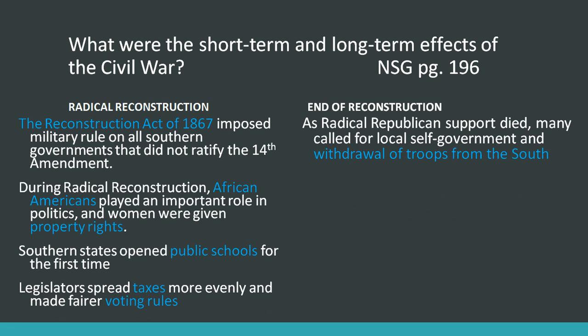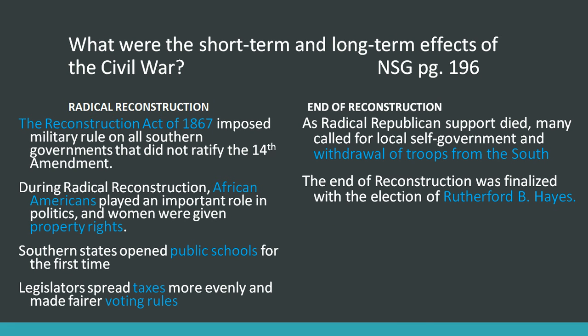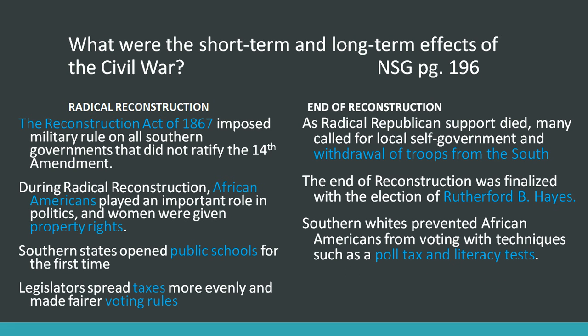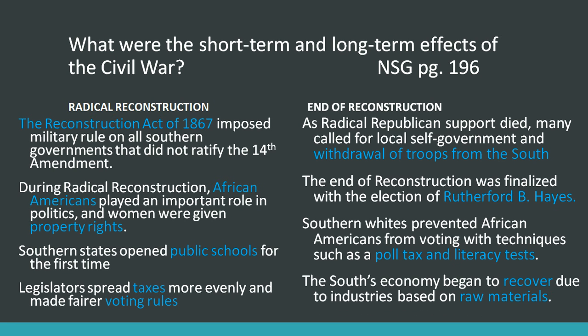Once Reconstruction ended, many called for local self-government and the withdrawal of troops from the South. The end of Reconstruction was finalized with the election of Rutherford B. Hayes. As a result, Southern whites prevented African American voting through techniques such as poll taxes, literacy tests, and the Grandfather Clause. However, the South's economy began to recover through Reconstruction, due to industries based on raw materials in the South.